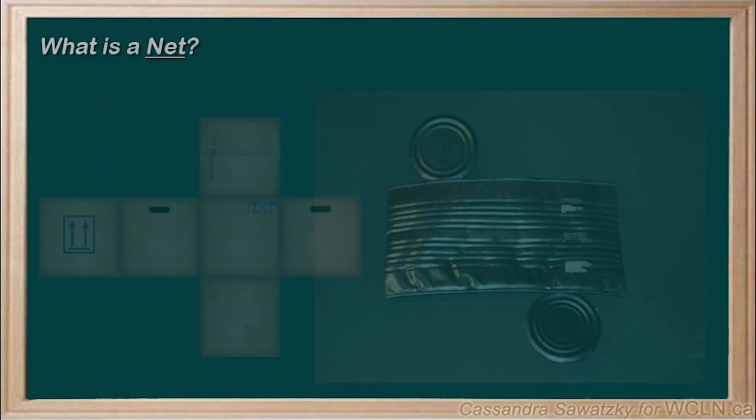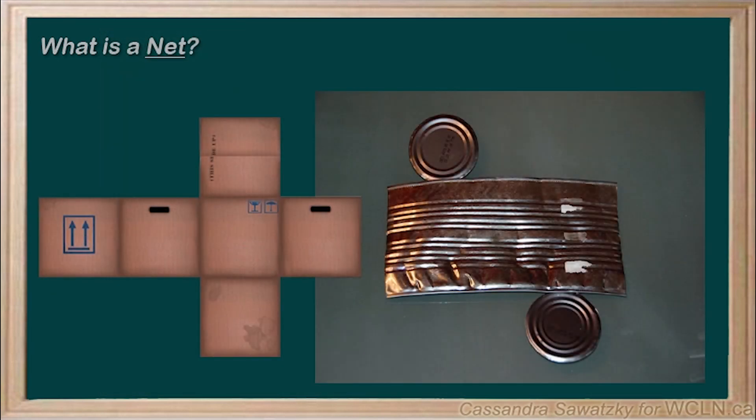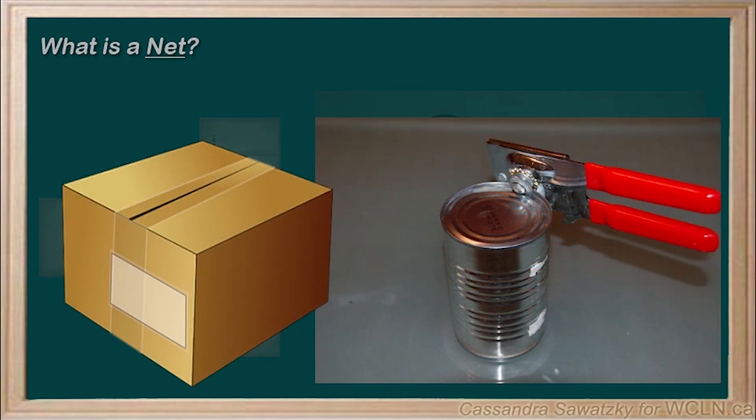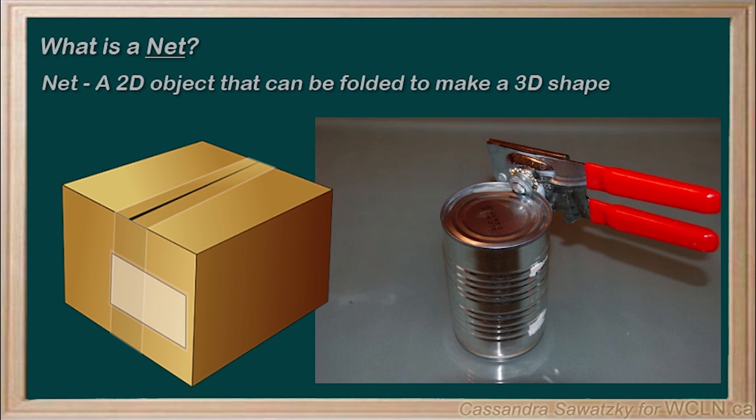Of course, with some tape and some glue, we can take our net and rebuild the original three-dimensional shape. Thus, a net is also a two-dimensional object that can be folded to make a three-dimensional shape.